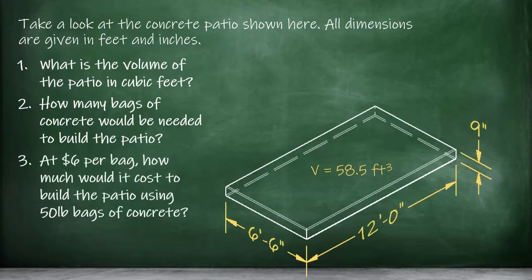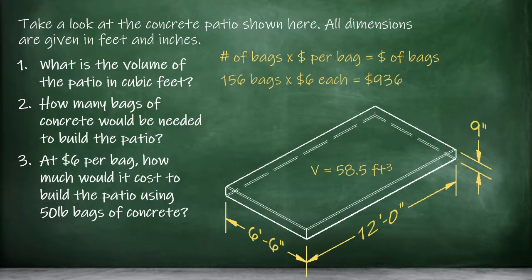If the bags cost $6 each, how much will the concrete mix cost for the whole patio? First, we take the number of bags needed, and multiply that by the cost per bag to find the total cost of the concrete mix. So, 156 bags times $6 per bag equals $936 worth of concrete mix. Look at us go!